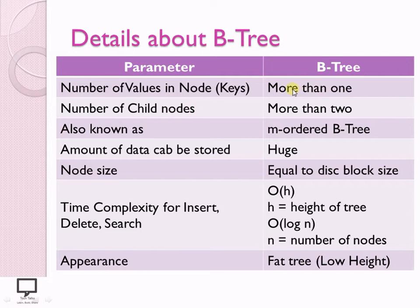Now let's see the number of child nodes. If the B-Tree is having more than one number of keys, it will have more than two child nodes. Because one key will have minimum two child nodes. If two keys are there, it will have three nodes. If three keys are there, it will have four nodes. So the number of keys decides how many child nodes are there, and the number of child nodes decides the order of B-Tree. If two keys are there, three child nodes will be there — that tree is called order-3 tree. If three keys are there, four child nodes — that is order-4 B-Tree. In this way the order is decided.